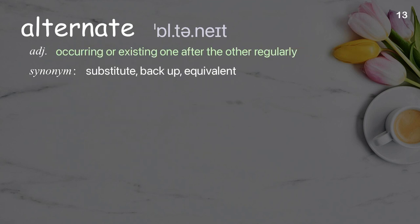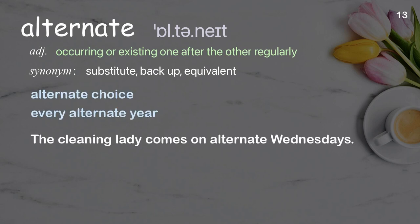Alternate: Occurring or existing one after the other regularly. Examples: Alternate choice, every alternate year. The cleaning lady comes on alternate Wednesdays.